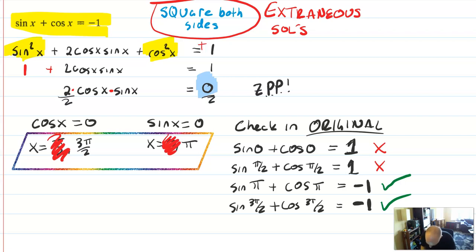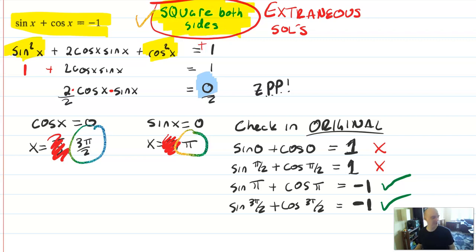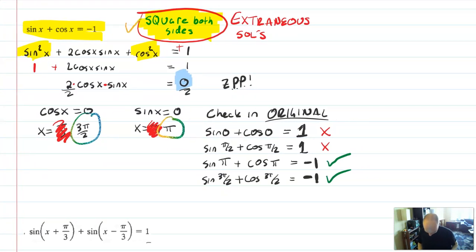So I have two real solutions and two fake solutions. On a quiz or test, I would want to see you find the four possible candidate answers and then show why those candidate answers that are false are false — that's part of solving this problem. The answers are 3π/2 and π. Make sure you plug in your answers when you're squaring both sides. Only when you're squaring both sides is it mandatory.